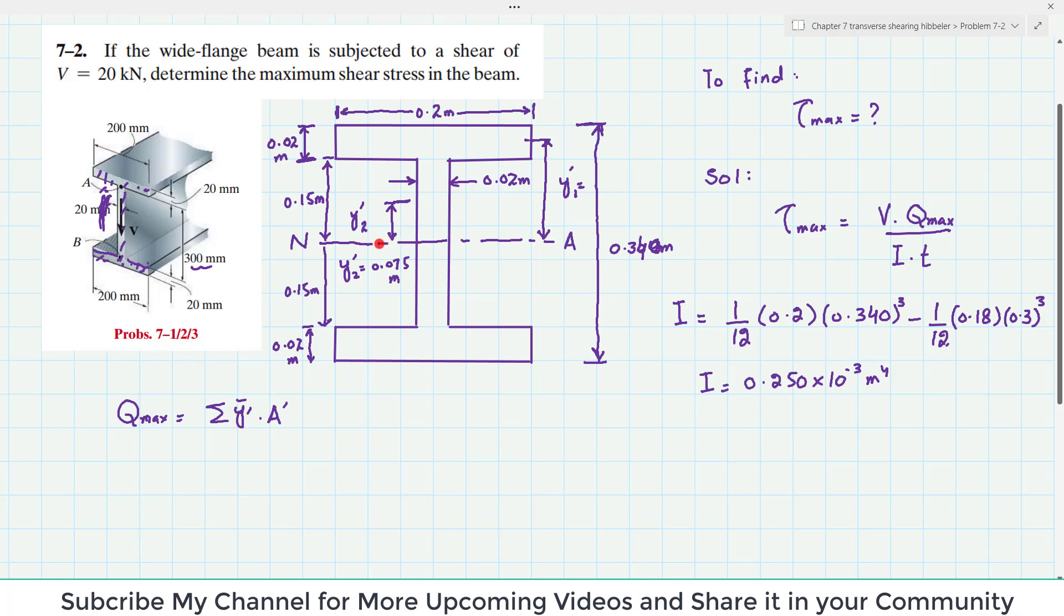I have drawn it over here. So this is the neutral axis which is at the mid of this 0.340. So ignore the lower portion and take the upper portion. So you can see you have two areas.